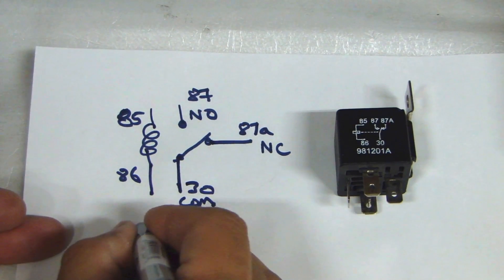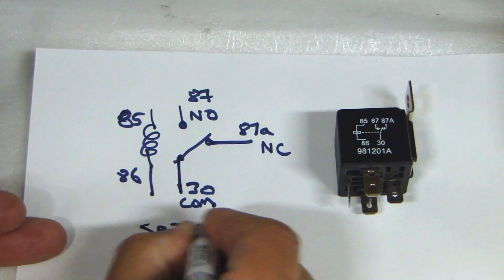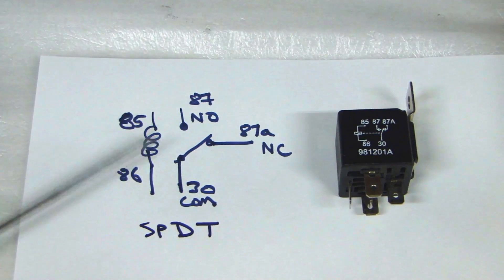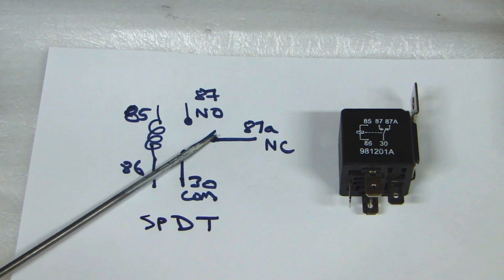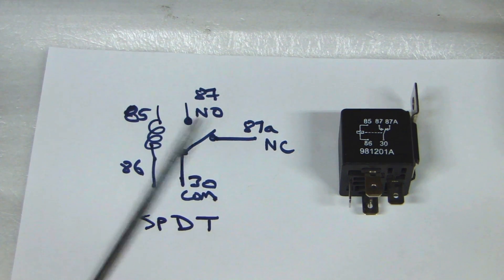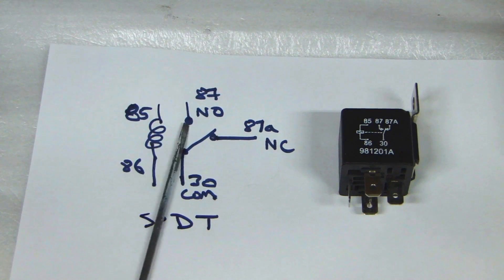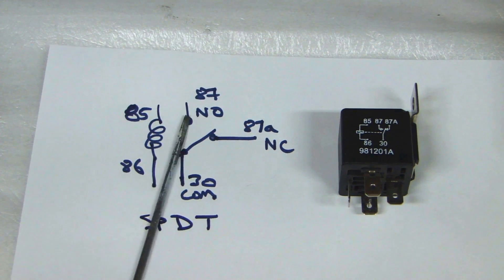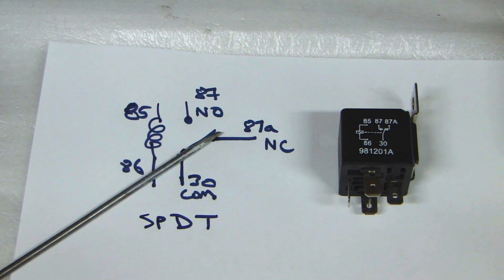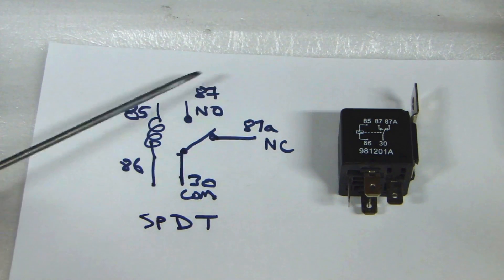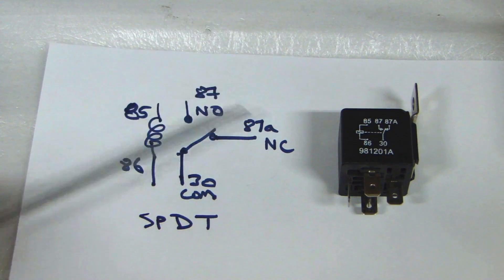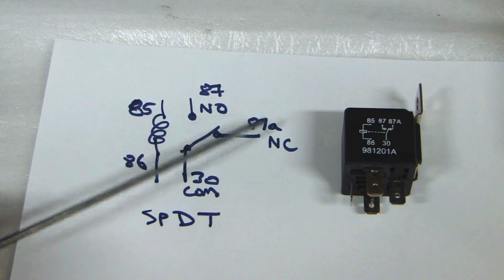This is also what they call a single pole, double throw. Because there is one contact that moves between these two over here, so single pole. There's one pole between these two contacts. It's double throw because there are two points over here. So single pole, double throw.